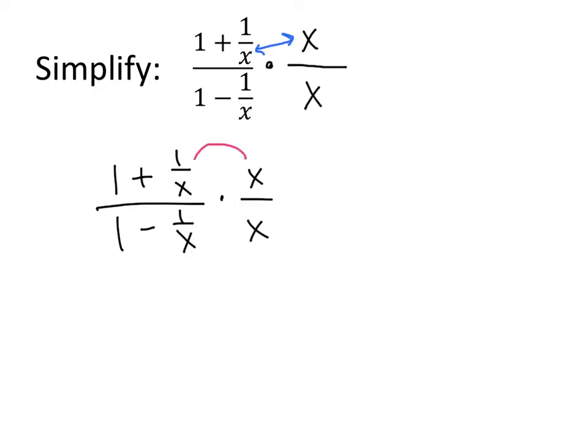On the top, when we distribute the x multiplied by both of the things on the top, x times 1 gives us x, and then x times 1 over x, those two x's divide out and we just get plus 1.